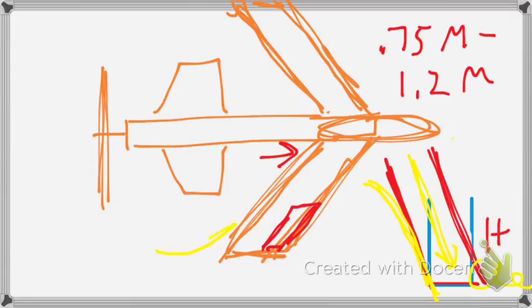With a forward swept wing, we actually have flow from the tip to the root because of the forward swept design. And so we have a reduction in wing tip vortices and their associated induced drag.